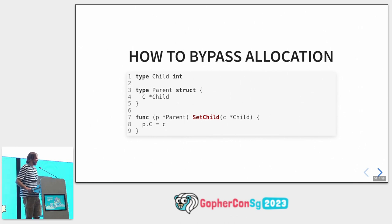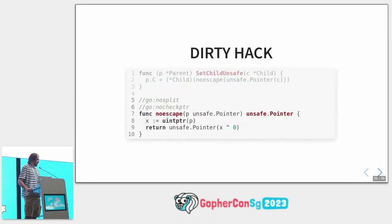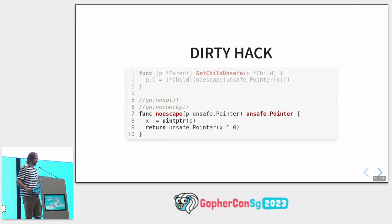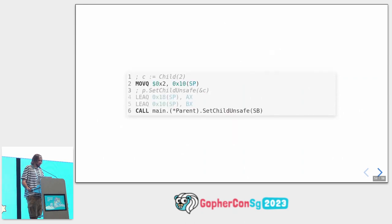Also, if we really need to bypass allocation for field assignment — for example if we use an external library that doesn't allow us to modify the code — we can use one dirty hack that I took from Go runtime sources: the noEscape function. It breaks the dependency for the escape analyzer. After this function, the compiler cannot know that the returned pointer depends on the parameter pointer. So when we call it, the value will be placed on the stack — there are no allocations.